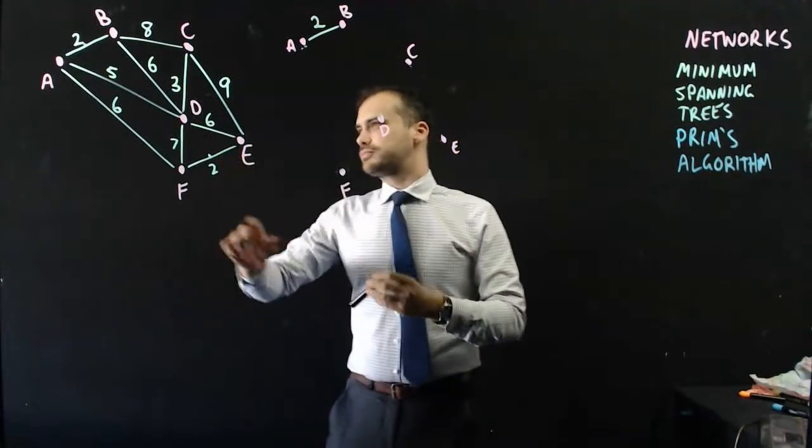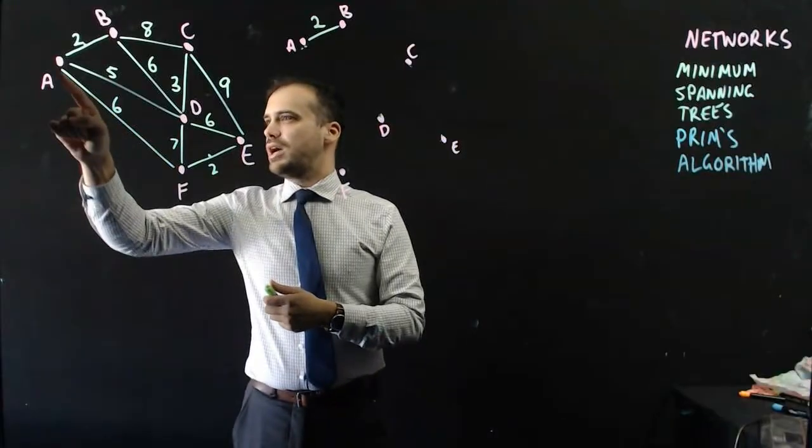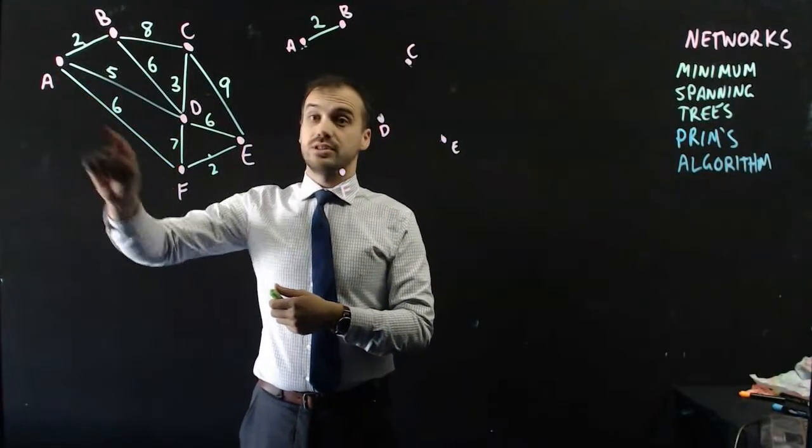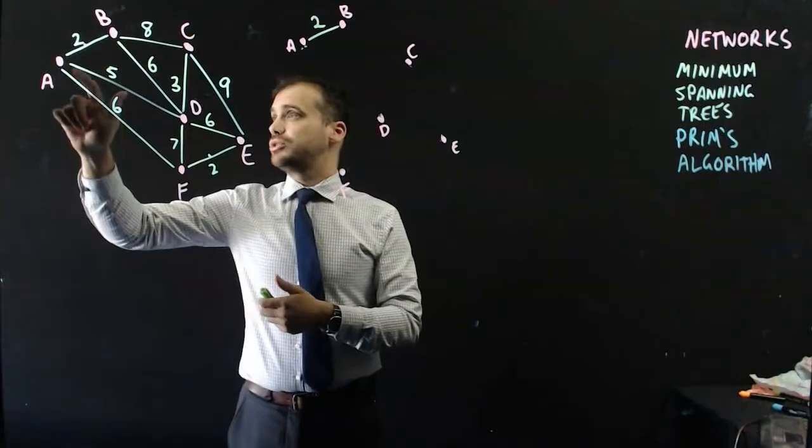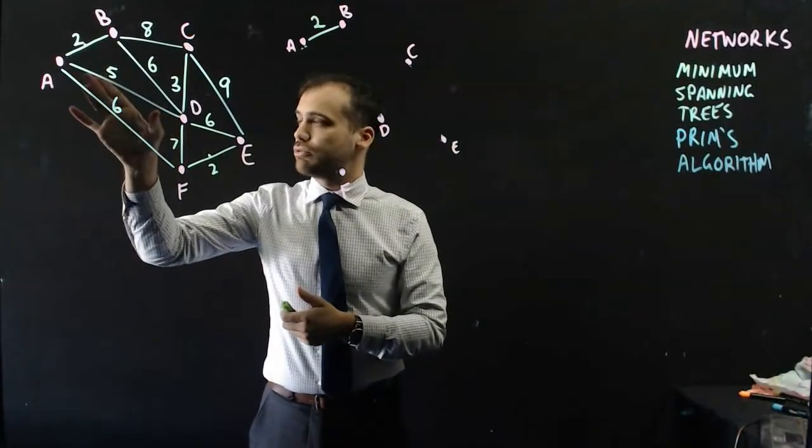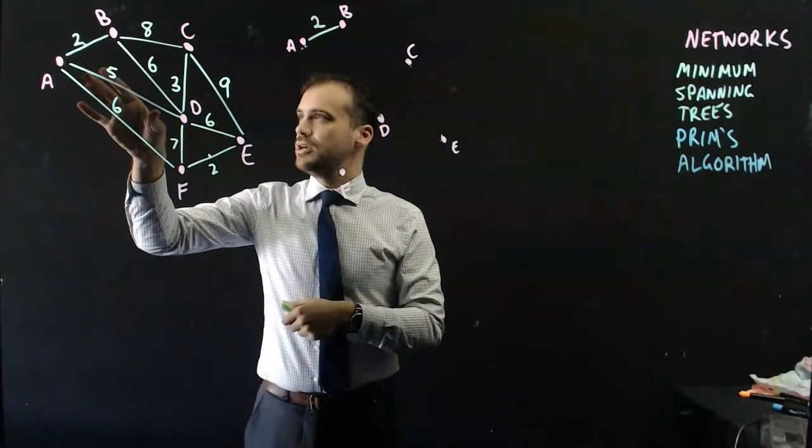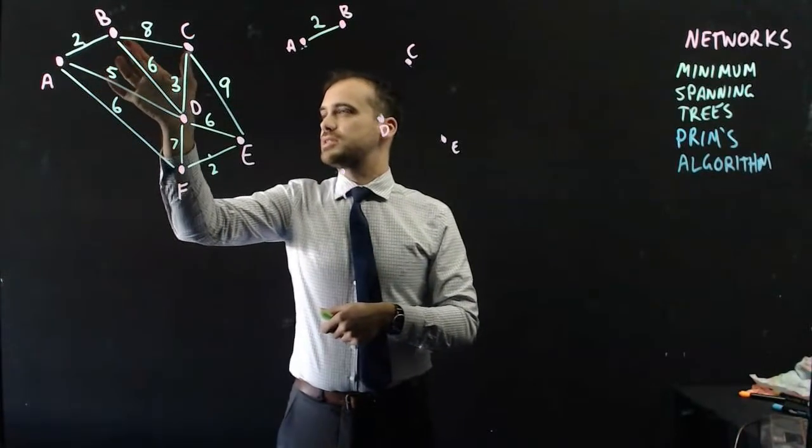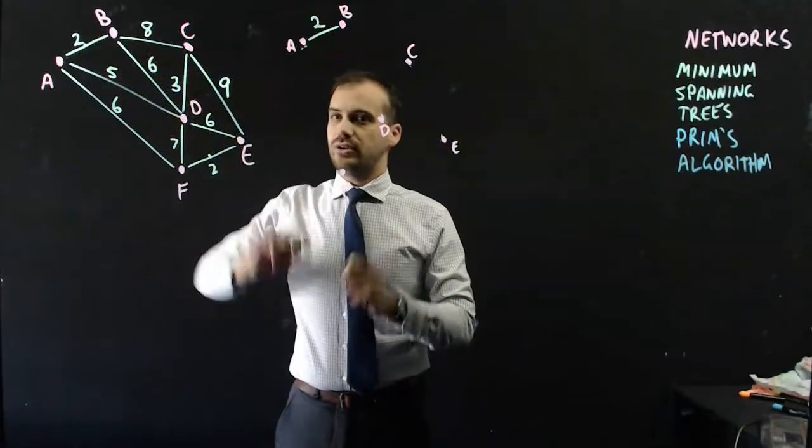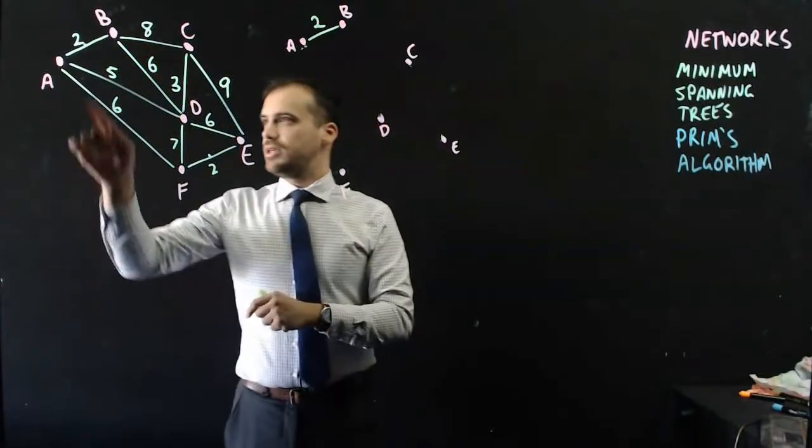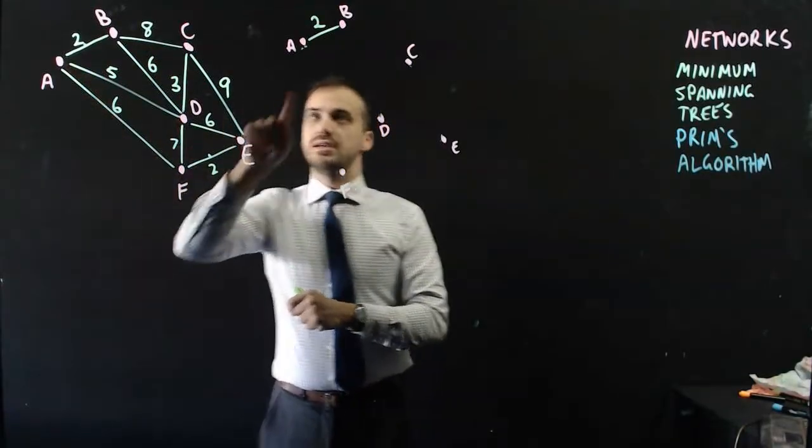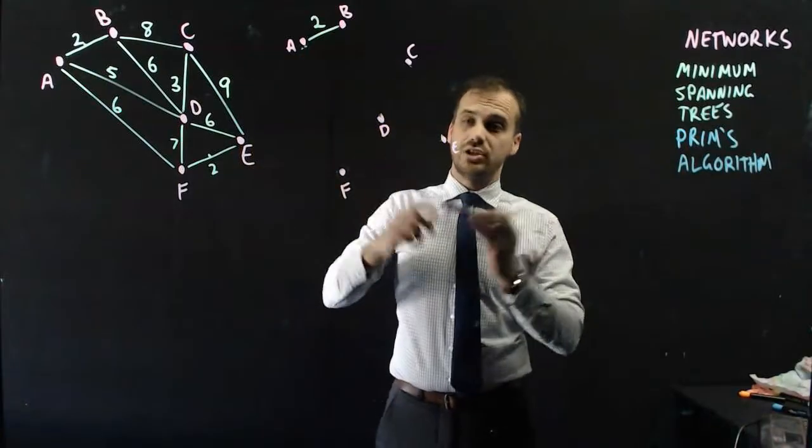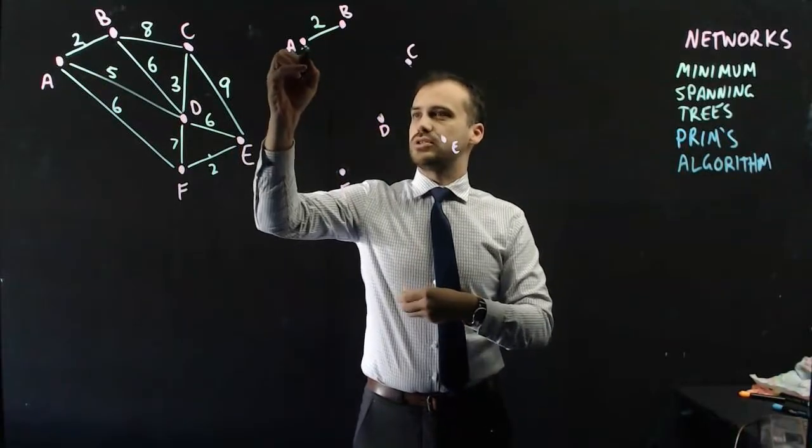So what are our options? We could join A to F using a road that's 6 long. We could join A to D using an edge that's 5 long. We could join B to D using an edge that's 6 long, or we could join B to C using an edge that's 8 long. The clear winner here is joining A to D with an edge that is 5 long. Let's do that.